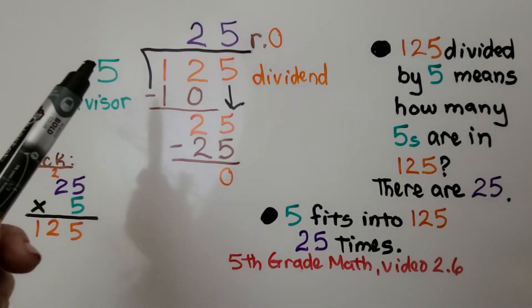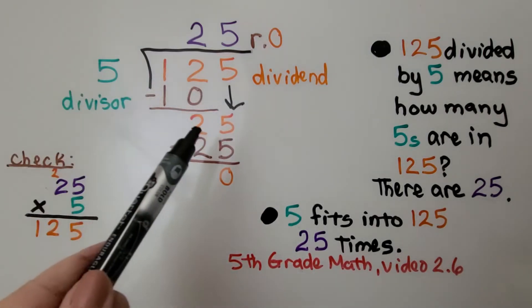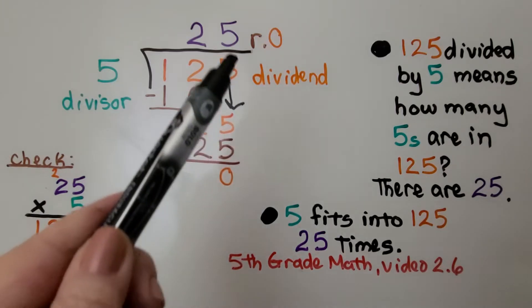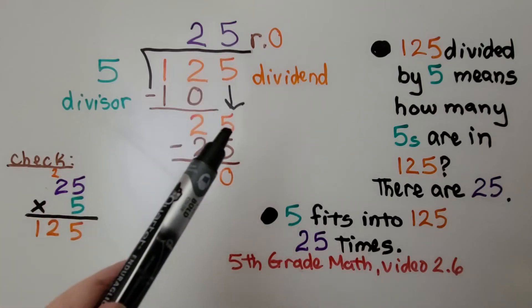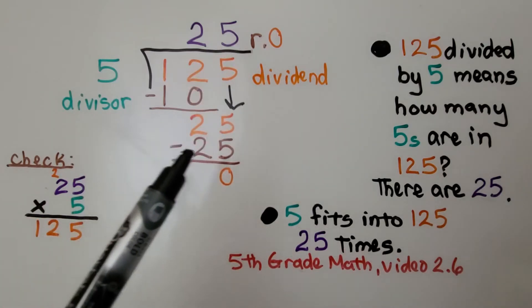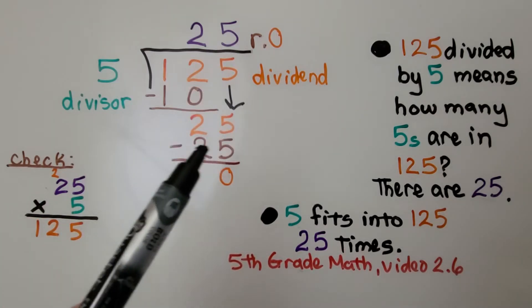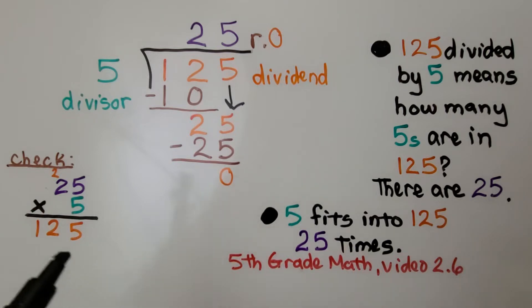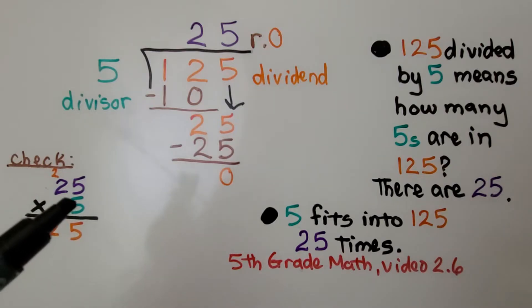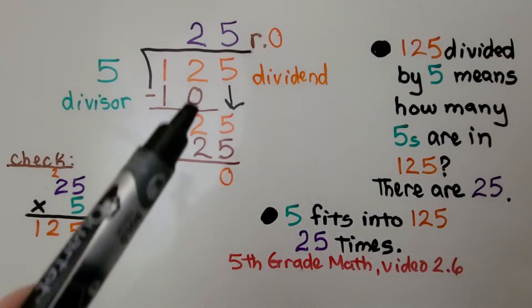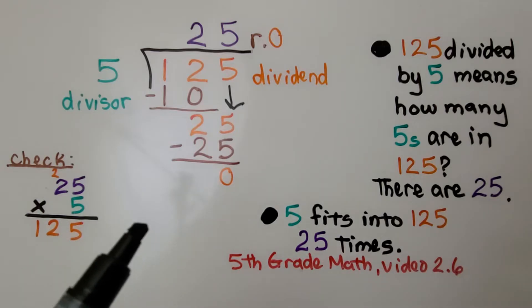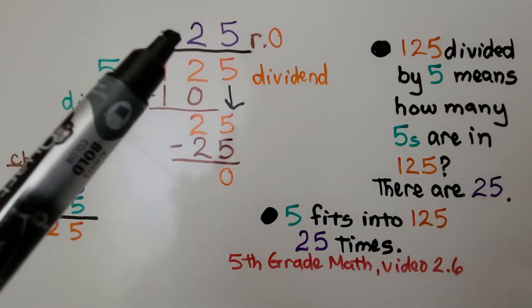Now we ask ourselves how many times 5 can fit into 25? Well, 5 times 5 is 25. We put a 5 above the 5 we drop down. We subtract, and we get a 0 for a remainder. We can check this by doing the quotient times the divisor. 5 fits into 125 25 times.